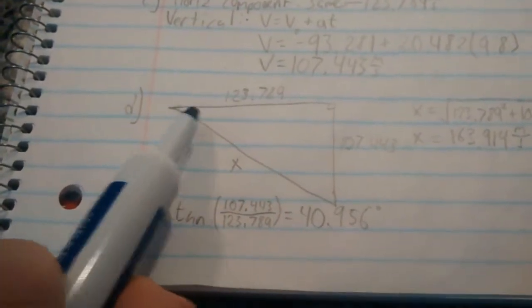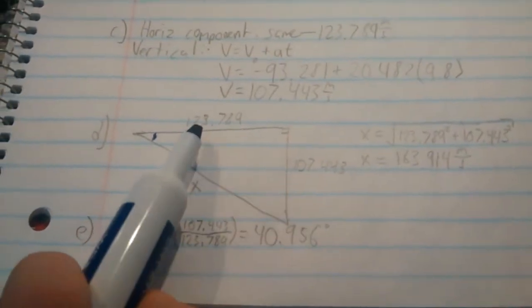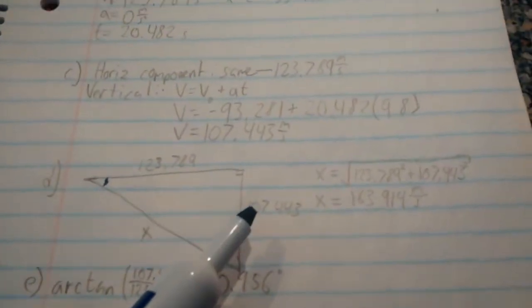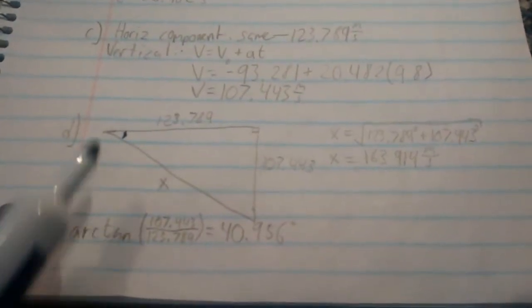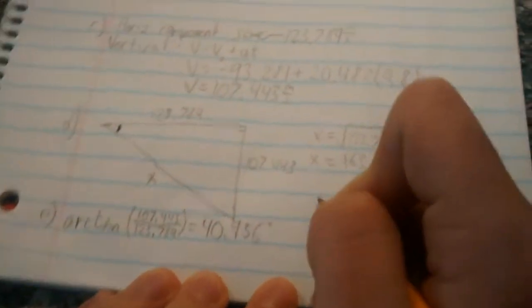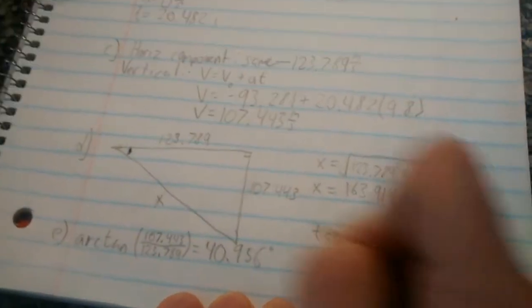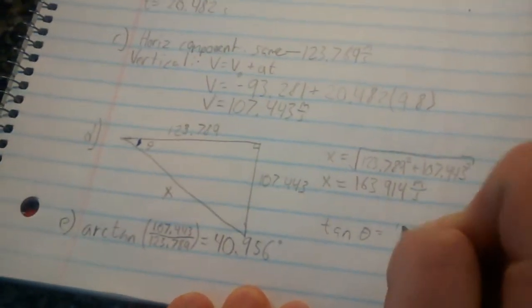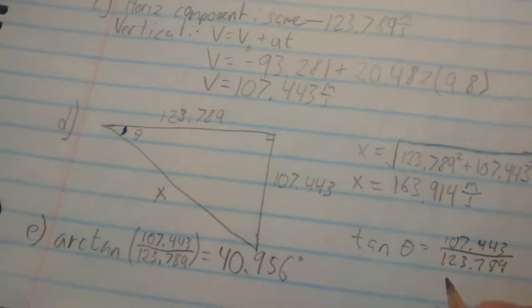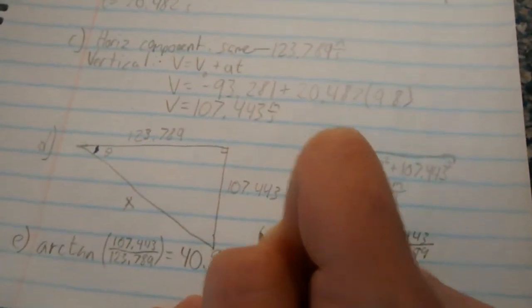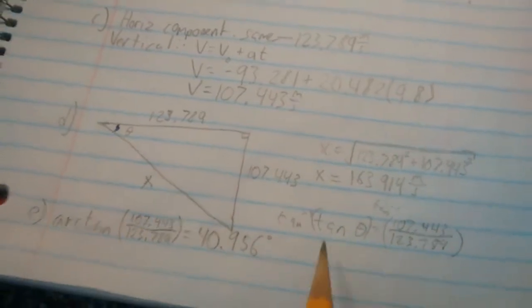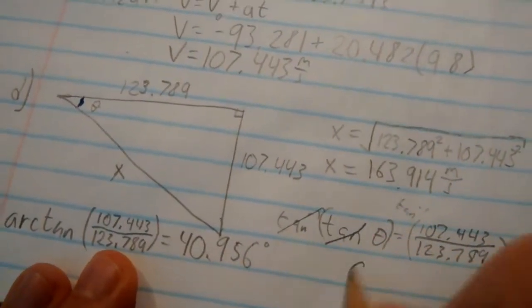Now, we know that the tangent of this angle is 107.443 over 123.789. That's just a simple trigonometric, you know, SOH CAH TOA, tangent is opposite over adjacent. So if we know that tangent of that. So let's say we know that tangent theta equals 107.443 over 123.789. We know that if we take the arc or the inverse of both sides, we can figure out, we can see the tangent inverse and tangent cancel out, and we can solve for that angle.